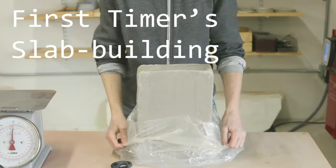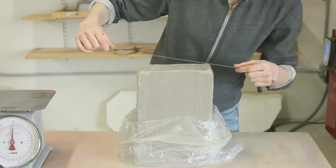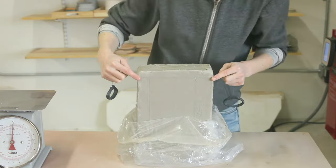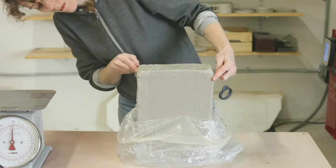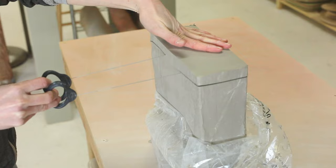For our slab building project we're going to start by cutting some clay off the block. This tool is just a wire with handles attached. To use it I want to line up the wire around the clay and then pull it towards me making sure to keep it straight and level.